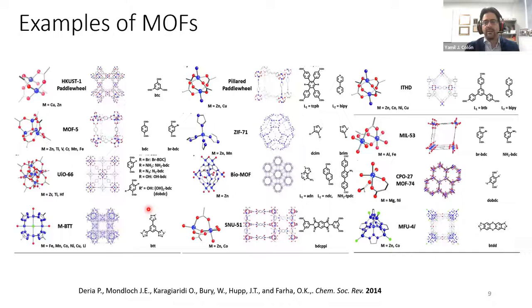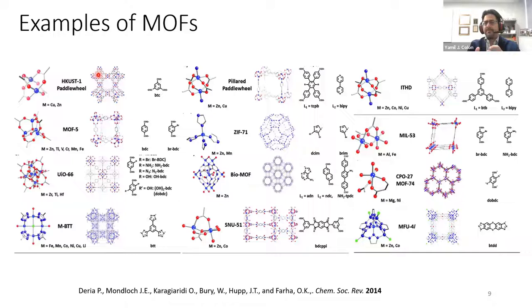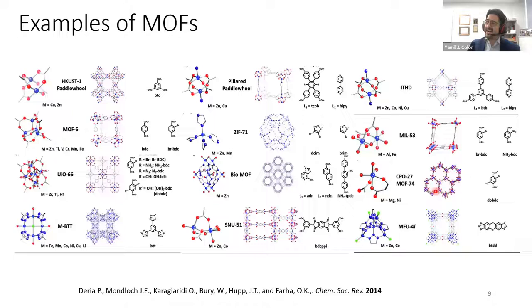Just to give you a sense of the diversity of structures available: HKUST-1 has a copper paddle wheel and a benzene tricarboxylate linker that self-assembles into a three-dimensional structure with a large pore mostly exposing benzenes, and a small cage with open copper sites. CIF-71 has very tight windows leading into very large pores, useful for separations. MOF-74 has one-dimensional channels with open metal sites lining the surface, targeted for catalysis and separations. This is just a very small subset of the diversity available.